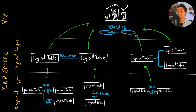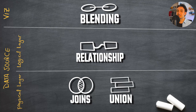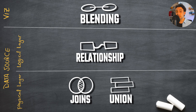So looking at this, you can see that Tableau offers four different methods of how to combine and connect tables at different layers and levels: in the physical layer we have joins and unions, in the logical layer we have relationships, and at the visualization level we have data blending.